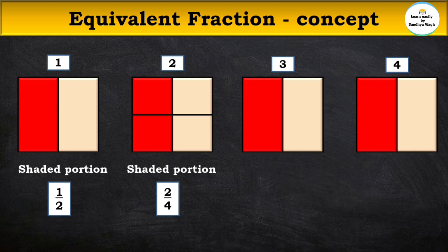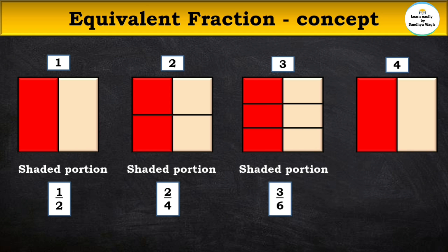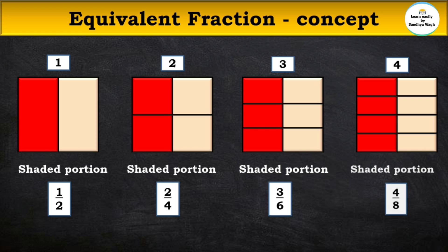When two lines are drawn across the same figure, it gets divided into six equal parts. The fraction that shows the colored part is three upon six. When three lines are drawn across the same figure, it gets divided into eight equal parts, and the fraction that shows the colored part is four upon eight.